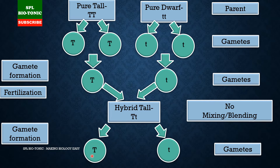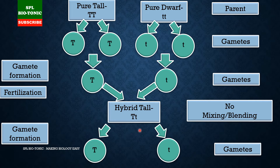Since each gamete contains only one of the two alleles, it expresses only one character. In the first case it expresses as tall, and in the second case as dwarf. These gametes are said to be pure for their character. Therefore, the law of segregation is also called the law of purity of gametes, and this law is universally applicable.